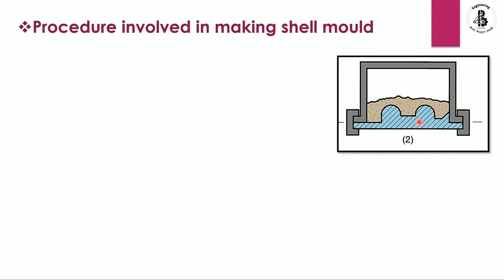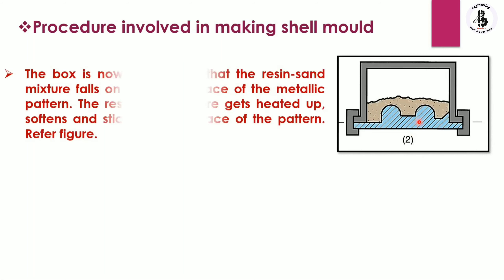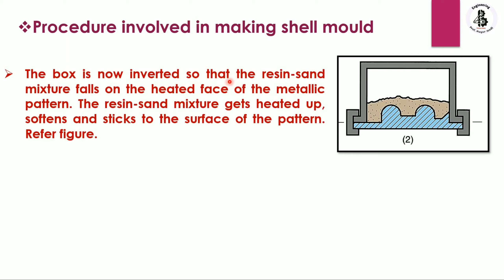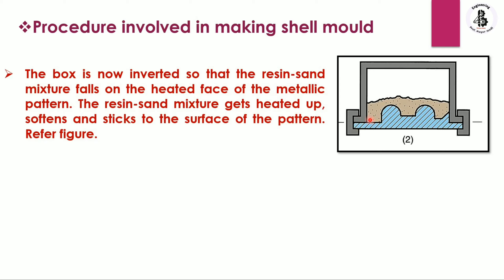The dump box is then inverted so that the resin-sand mixture falls onto the heated face of the metallic pattern. Due to the pattern being at a higher temperature, the resin-sand mixture gets heated up, softens, and sticks to the surface of the pattern. These sand and binder particles stick to the surface and form a layer according to the shape of the pattern.